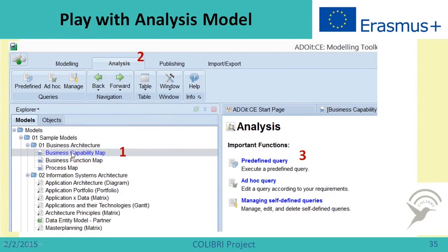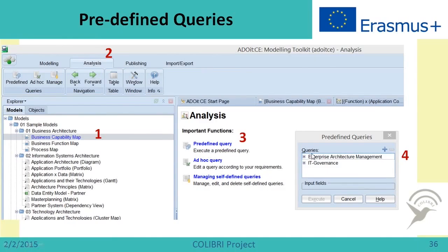To play with the analysis model, we choose one of the existing models created by the person who developed it and then choose the analysis button. When we have done this, we will see analysis functions which can be used by predefined queries, by ad hoc queries, and also by self-defined queries. For this Community Edition, we will try predefined queries. Clicking on predefined queries, I see a choice between enterprise architecture management and architecture management and IT governance. So this ADO IT tool is useful not only for enterprise architecture management but also for IT governance.